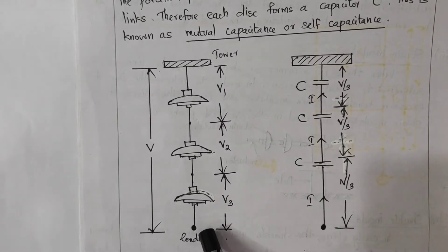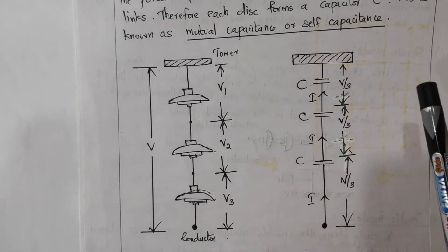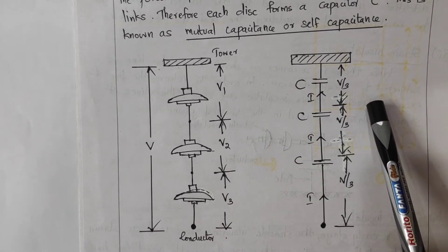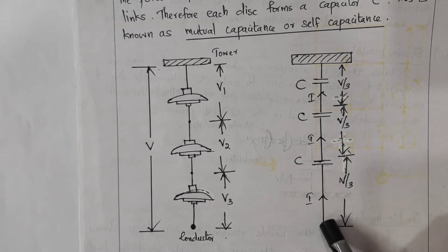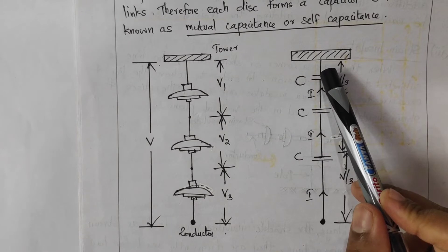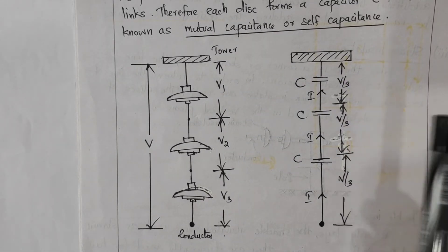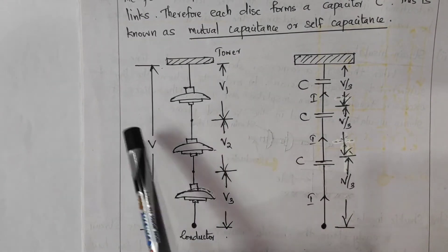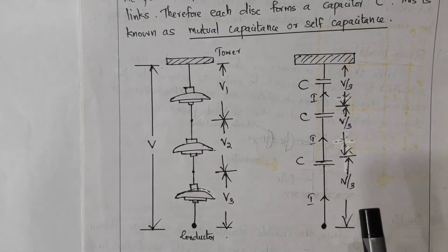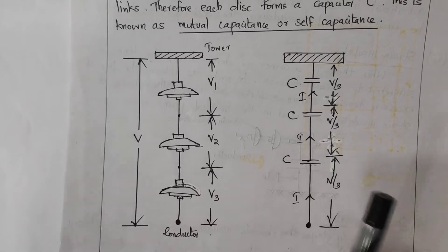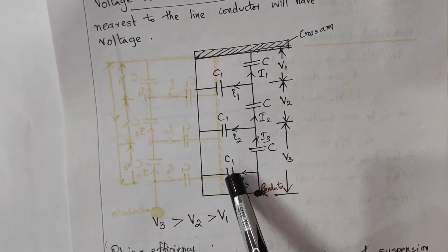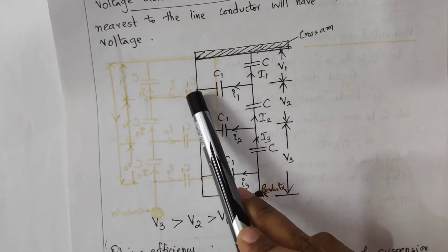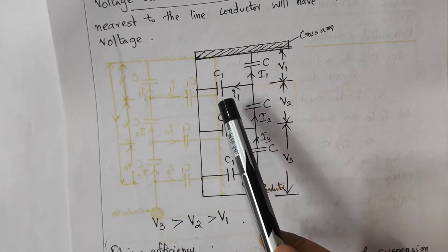If the total voltage across this string is V, the voltage distribution across each capacitor would be V by 3, and current from the conductor flows accordingly. However, in actual cases, there will be shunt capacitance also — that is, between the metallic link and the tower there forms a capacitor called the shunt capacitance, denoted C1.